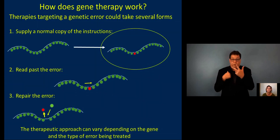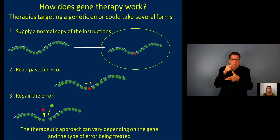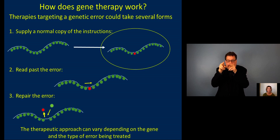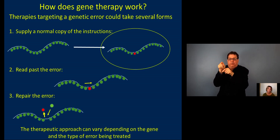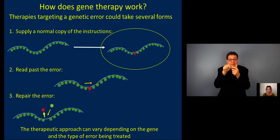So how does this work? Basically, there are three main ways that people are working on to try to approach gene therapy. The first way is to provide a replacement copy of the instructions — basically delivering a healthy copy of the gene to the appropriate body tissue so that it, instead of the native incorrect instructions, will be used to build a protein. And then hopefully that protein will be able to correct some of the damage that was done by having an incorrect protein there for as long as it's been.